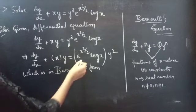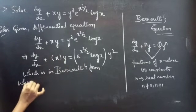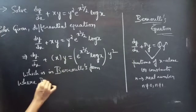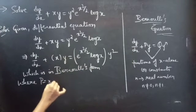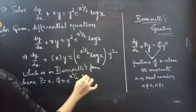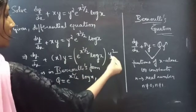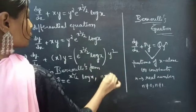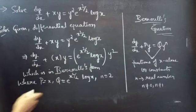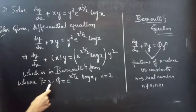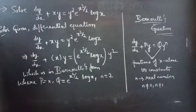By comparing the given equation with Bernoulli's equation, we get P equals x, Q equals e^(x²/2) times log x, and by comparing y squared with y^n, we get n equals 2, which is a real number. Here P and Q are functions of x alone since it does not involve any variable other than x.